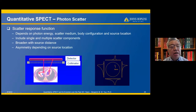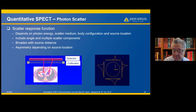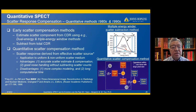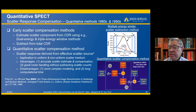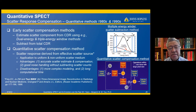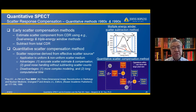For the application of quantitative SPECT to photon scatter compensation, the process is more complicated due to the complex scatter response function. Early scatter compensation methods are based on dual-energy and triple-energy window methods, which estimate the scatter component and subtract it, but subtraction enhances noise in the image. Quantitative scatter compensation applies to uniform and non-uniform scatter media, providing more accurate scatter estimates and good noise handling, but involves more complex modeling and longer computation time.